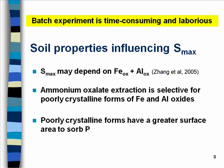Phosphorus sorption isotherm is time-consuming and laborious as a batch experiment. So many scientists have tried to find soil properties that can estimate sorption capacity. Zhang et al. 2005 found that the maximum sorption capacity of the soil relies on the summation of iron and aluminum extracted by ammonium oxalate. Ammonium oxalate is used because it is a selective solution for the poorly-crystallized forms of iron and aluminum oxides, which have a greater surface area to sorb phosphorus.